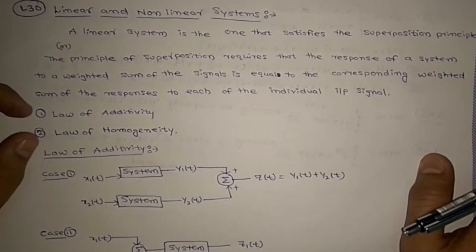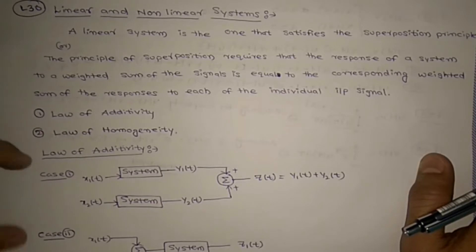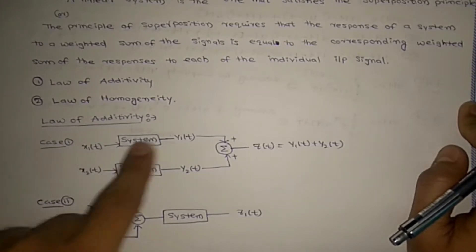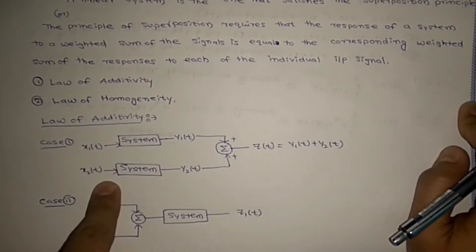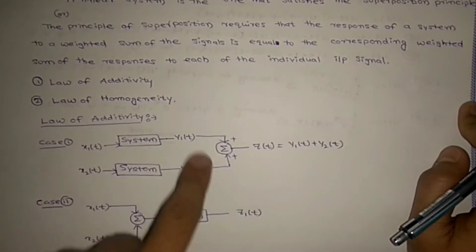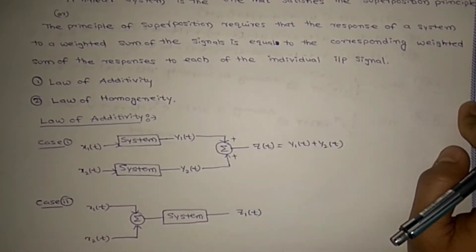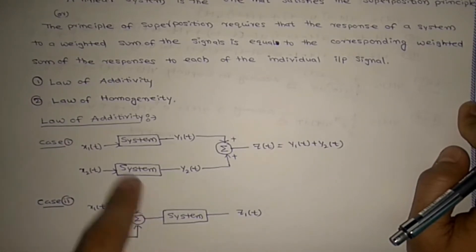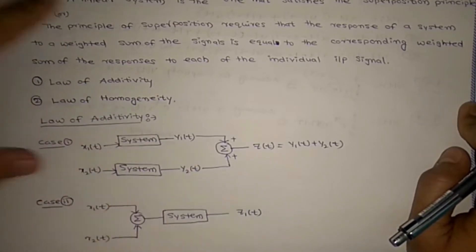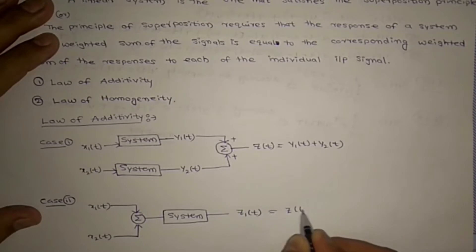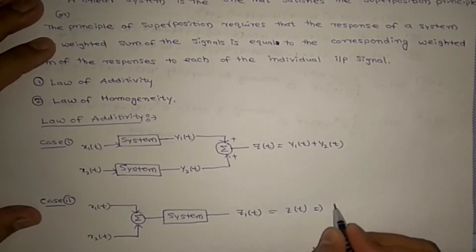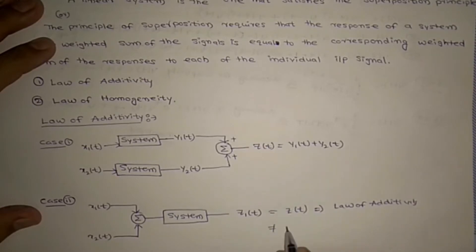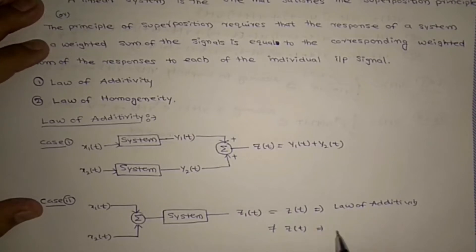Let us see these two laws. Law of additivity: in case one, if you have a system and you give input X1(t), you will get output Y1(t). If you give the same system a different input, you will get Y2(t). If you add these two outputs, you get Y1(t) plus Y2(t). In case two, you take X1(t) and X2(t), add them first, then pass through a single system and get output Z1(t). If Z1(t) equals Y1(t) plus Y2(t), the system satisfies the law of additivity. Otherwise, it is a non-linear system.